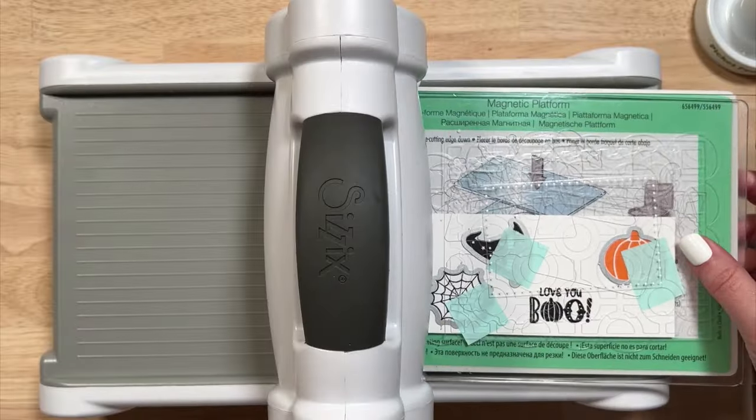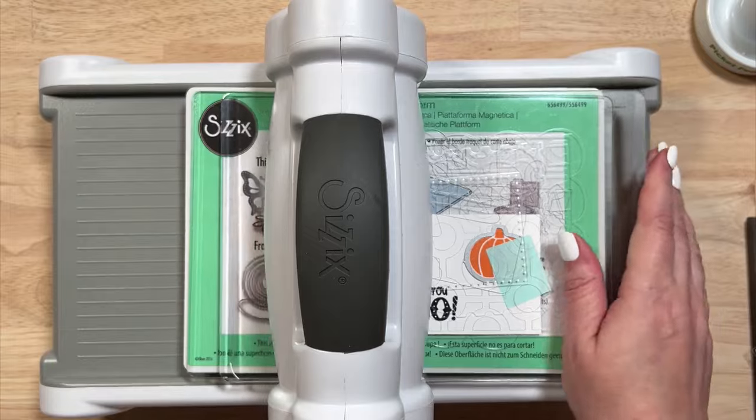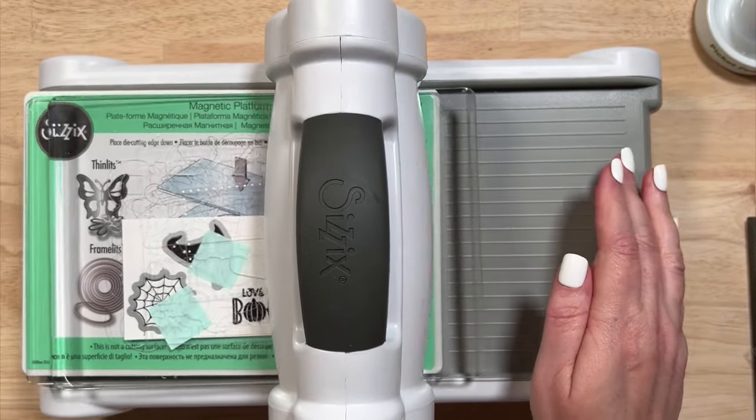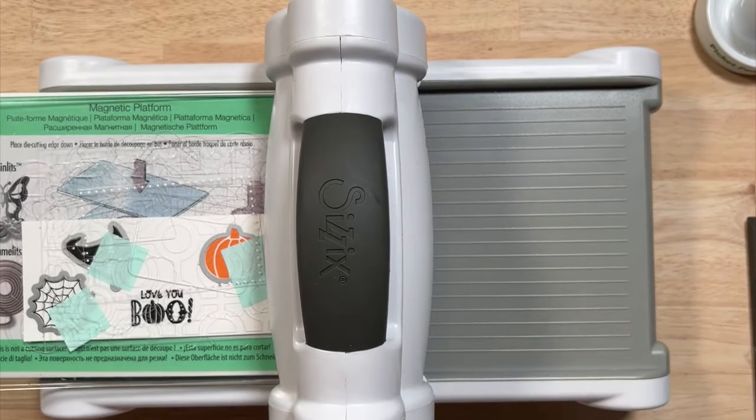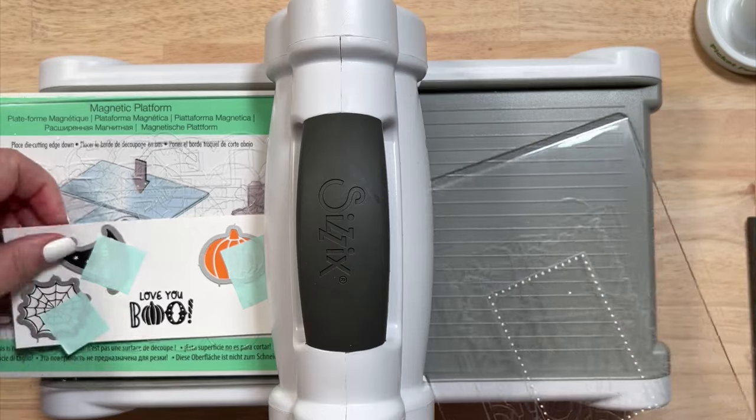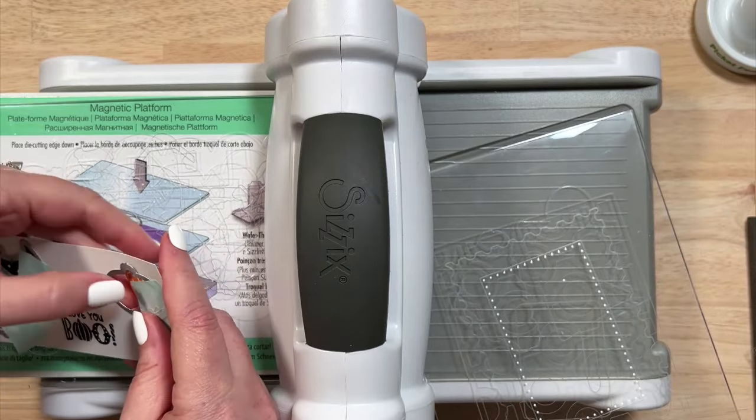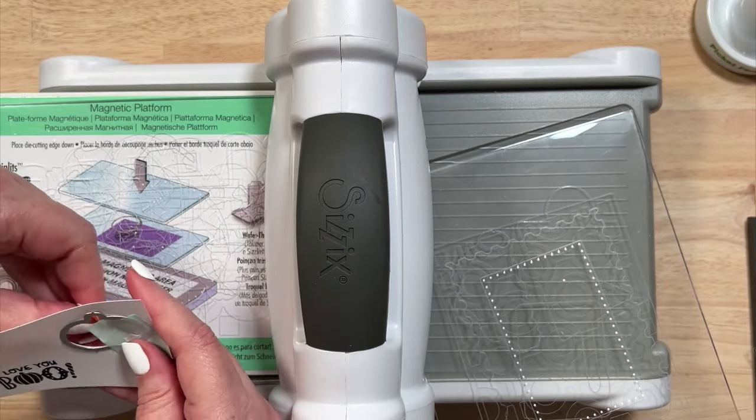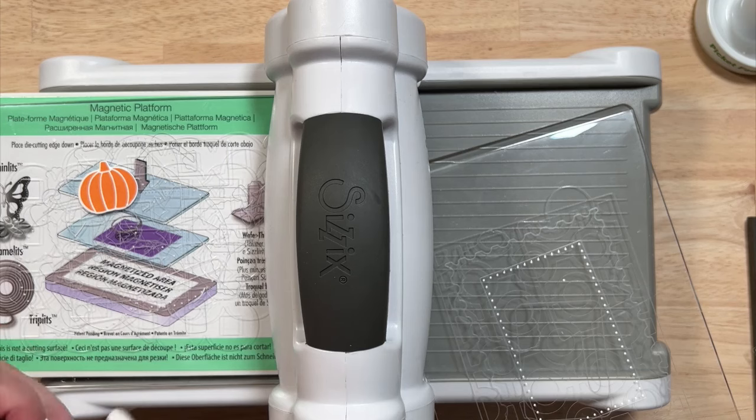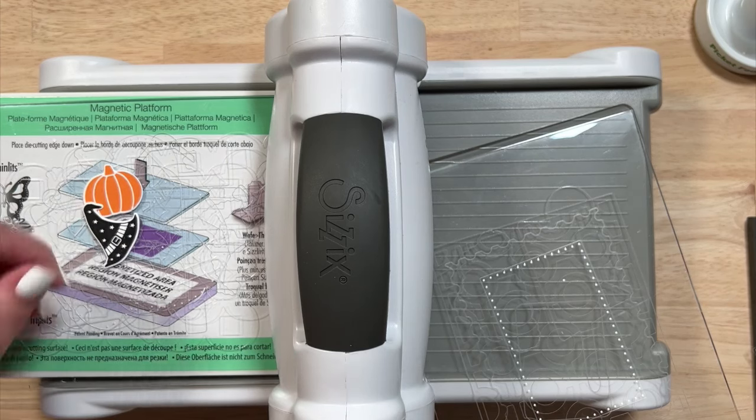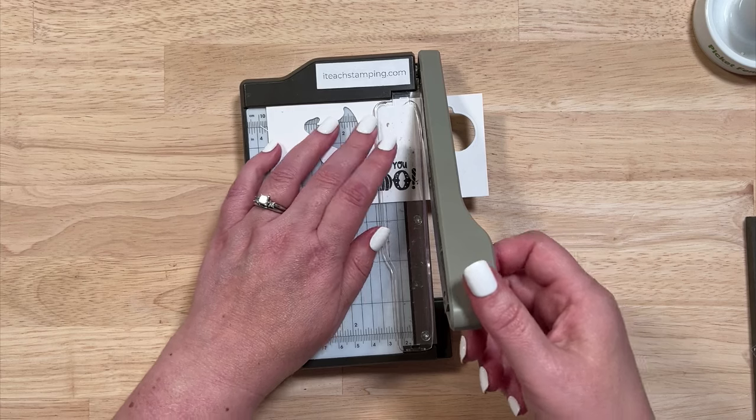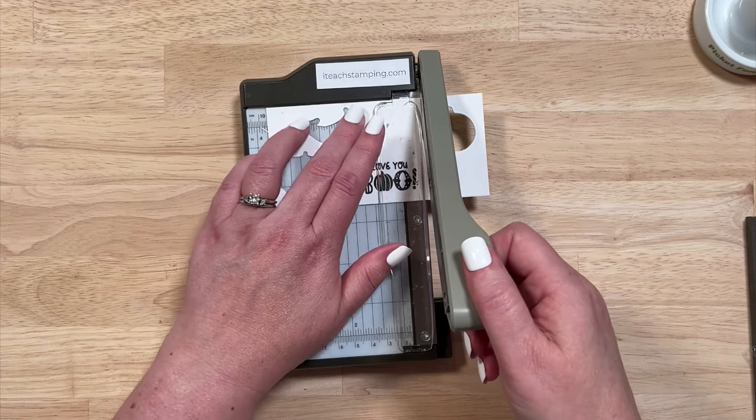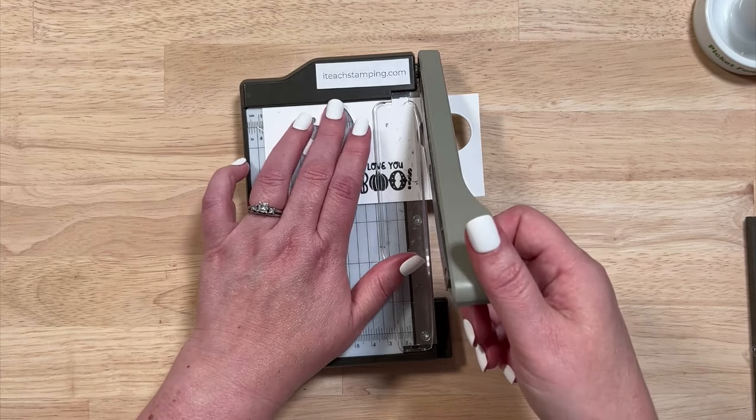Then I'm going to use some mint tape to hold my dies in place and run this through my Big Shot. I'm going to take my paper trimmer and cut down my sentiment.